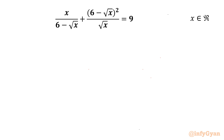Welcome back to Infigyan, my dear friends. Today in this video we are having one very interesting question from rational equations. It is x over (6 minus √x) plus (6 minus √x)² over √x, equal to 9. We have to find out all real solutions.